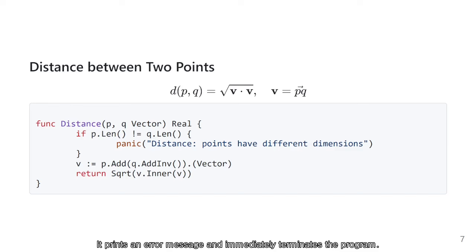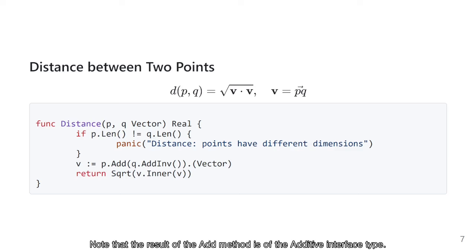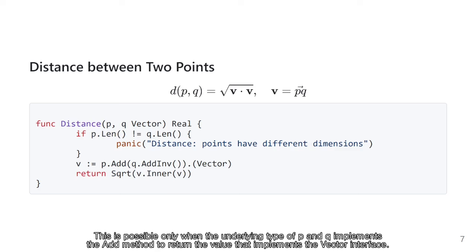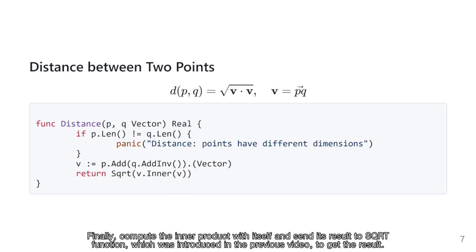If the two lengths are the same, p and q should be subtracted. Here, I have subtracted q from p, which is equivalent to adding minus q to p, so it can be implemented this way. Note that the result of the add method is of the additive interface type. Since we will use the inner method next, we must convert it back to the vector interface type. This is possible only when the underlying type of p and q implements the add method to return a value that implements the vector interface. This may be confusing at first, but it will be clear when we look at an example of actual implementation of vector. Finally, compute the inner product with itself and send its result to the sqrt function, which was introduced in the previous video, to get the result.